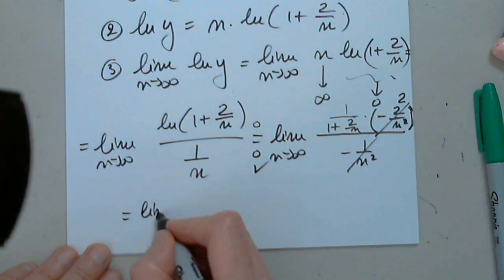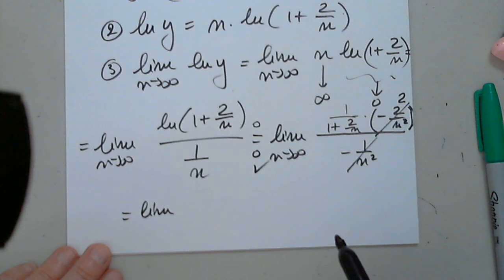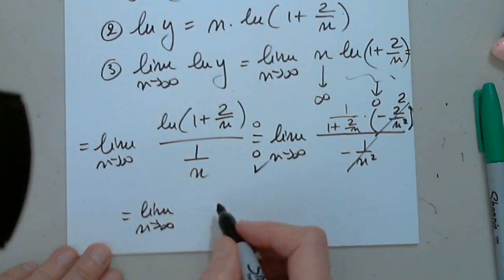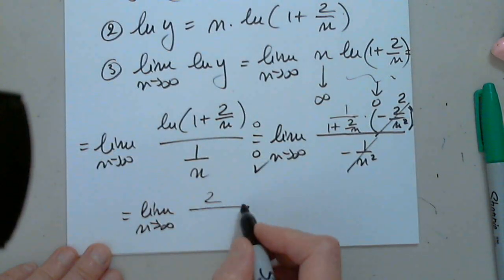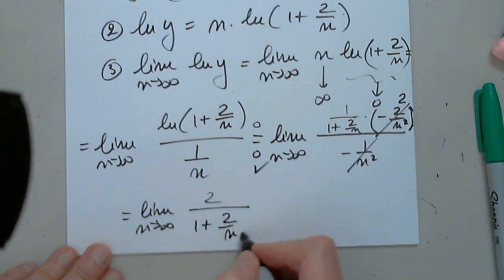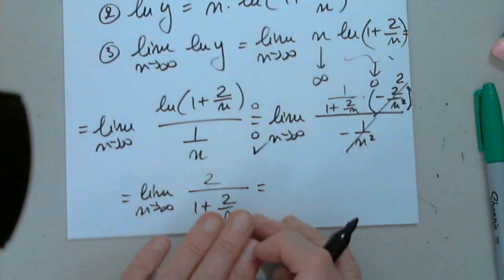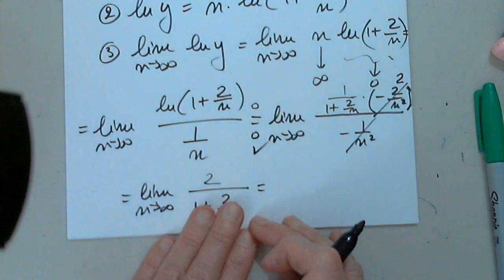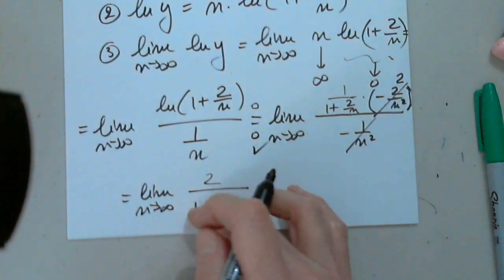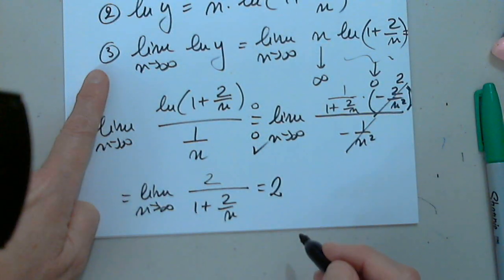So then we have the limit as n approaches infinity of 2 over (1 + 2/n). When we apply the limit, 2/n approaches 0, so we get 2 over 1, which equals 2. This completes step 3.